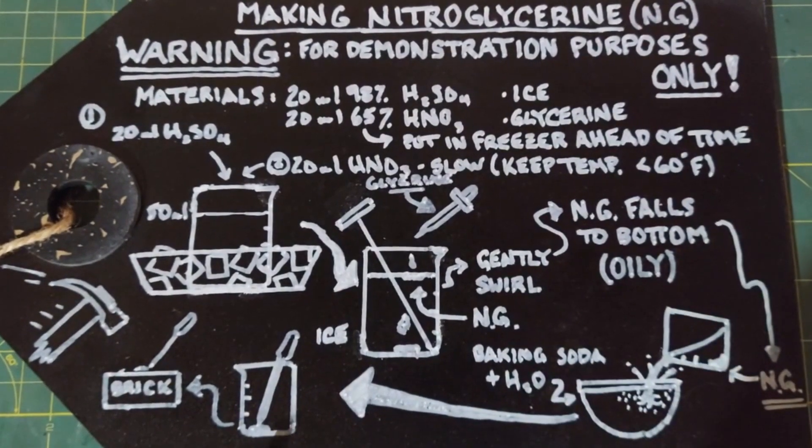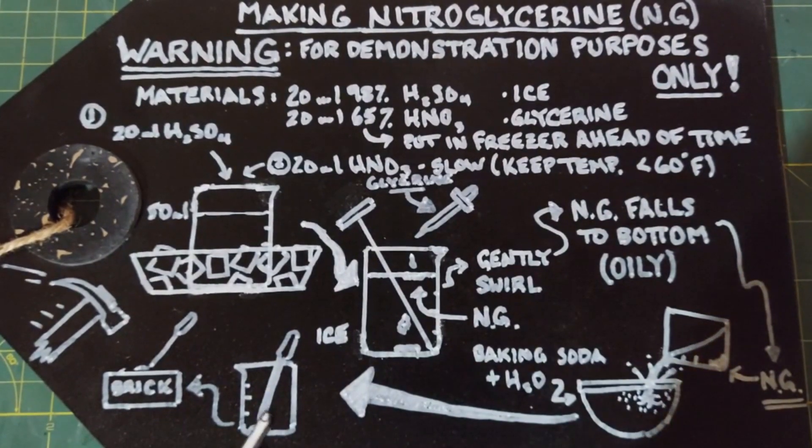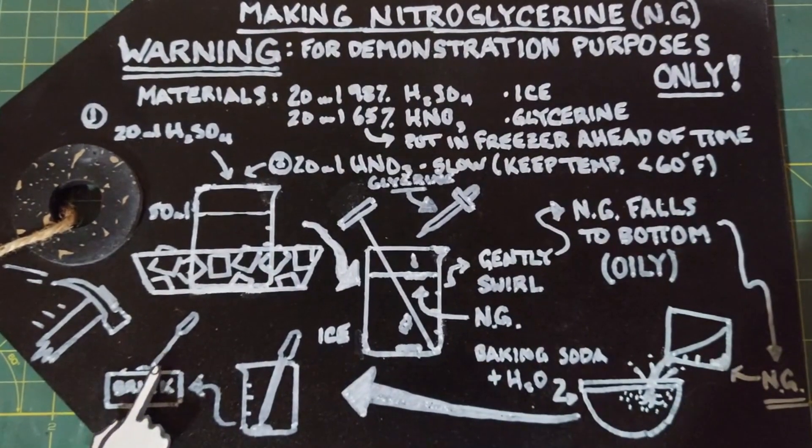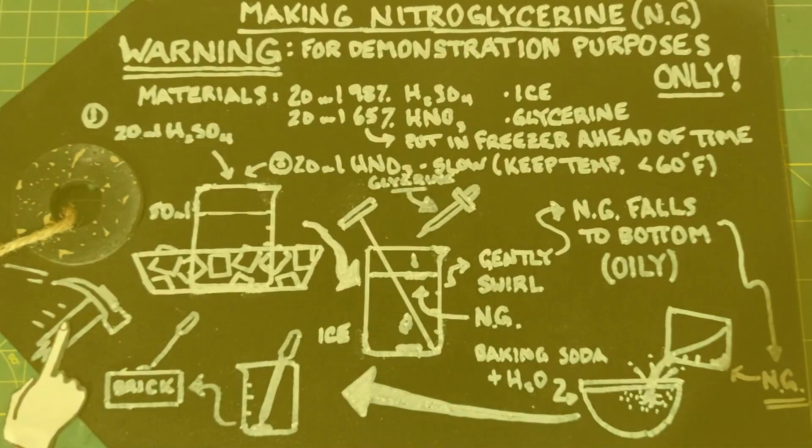There may be a small amount of acids left on the bottom, don't worry about it. But use a pipette and suck up the nitroglycerin. Do next is put a couple of drops or maybe just a single drop on a brick here and I am going to hit it with a hammer.